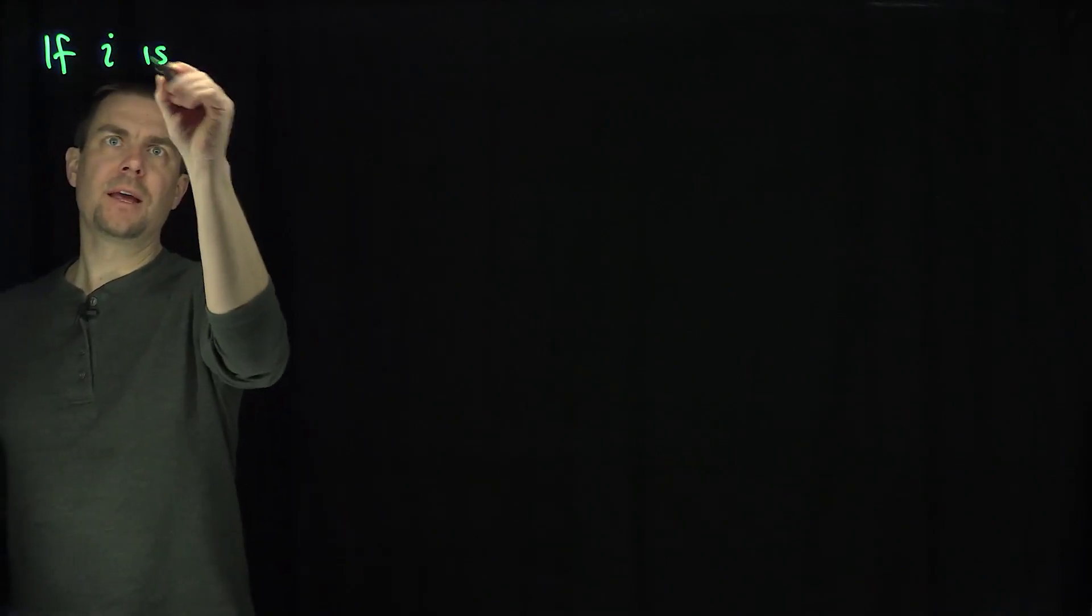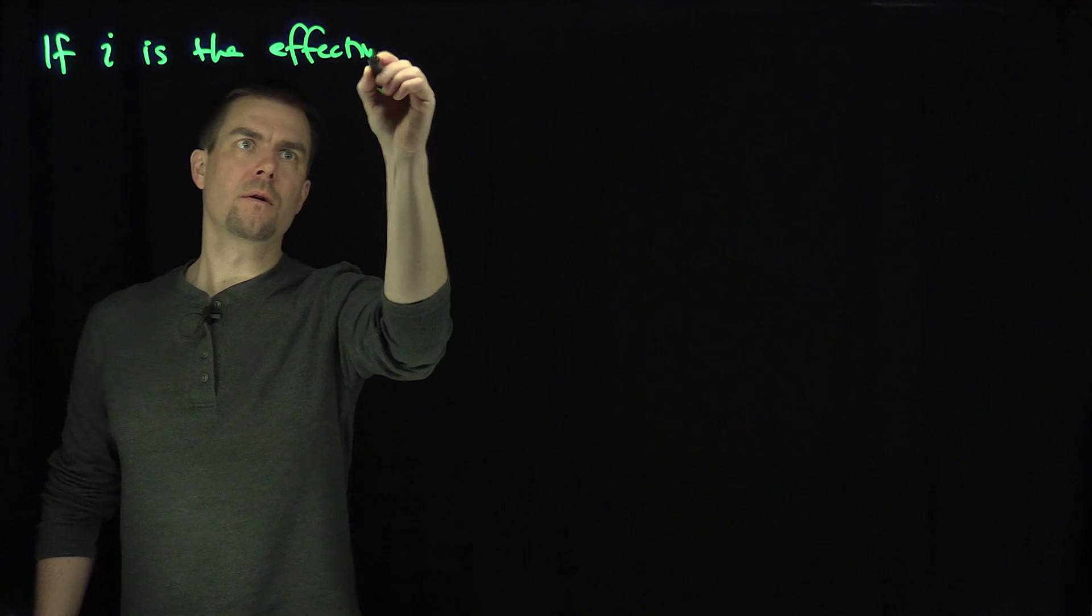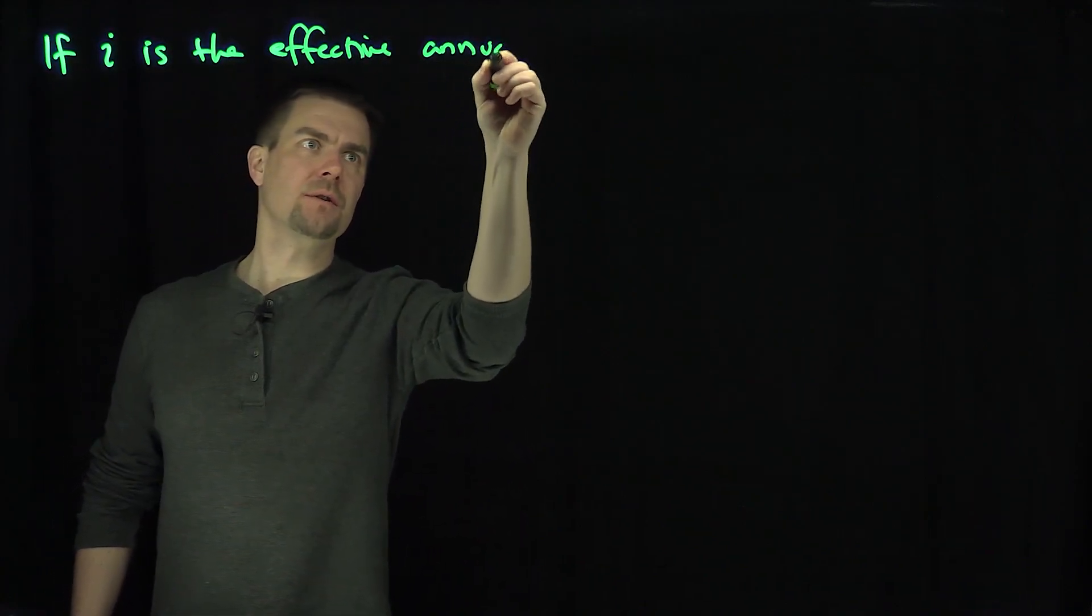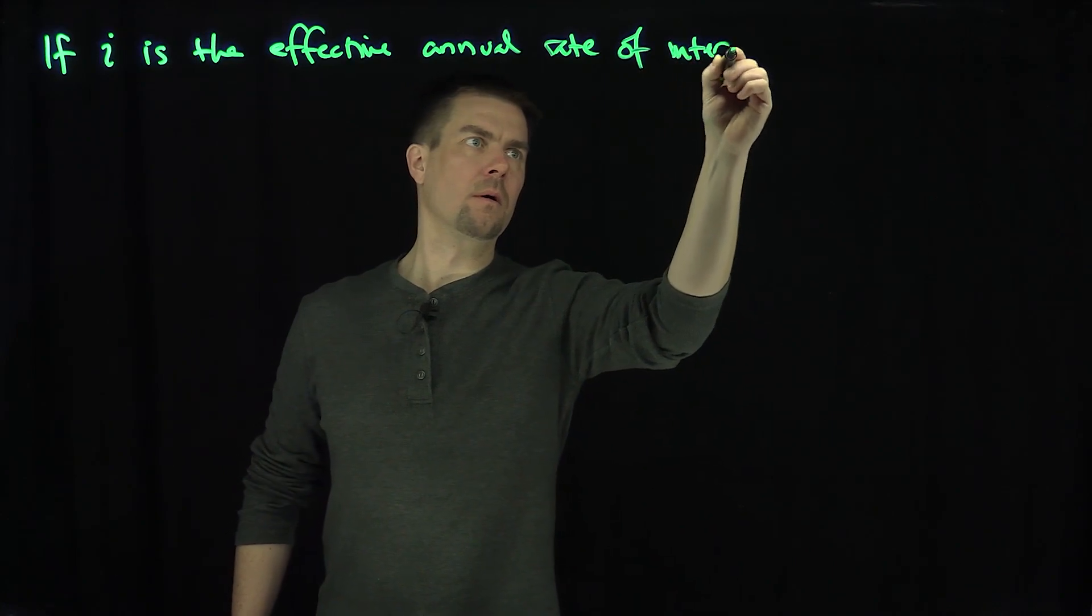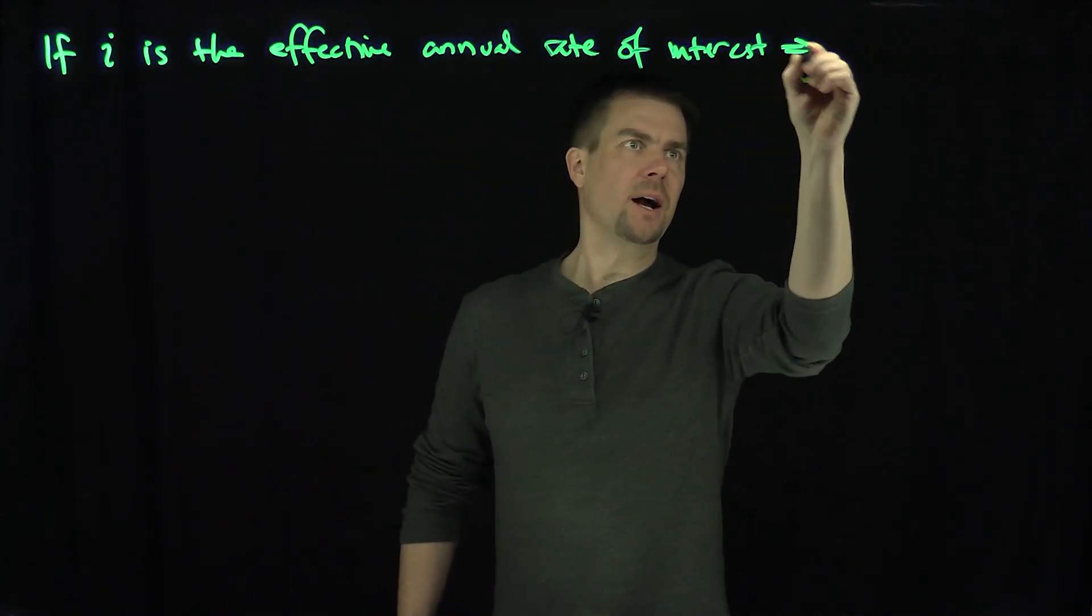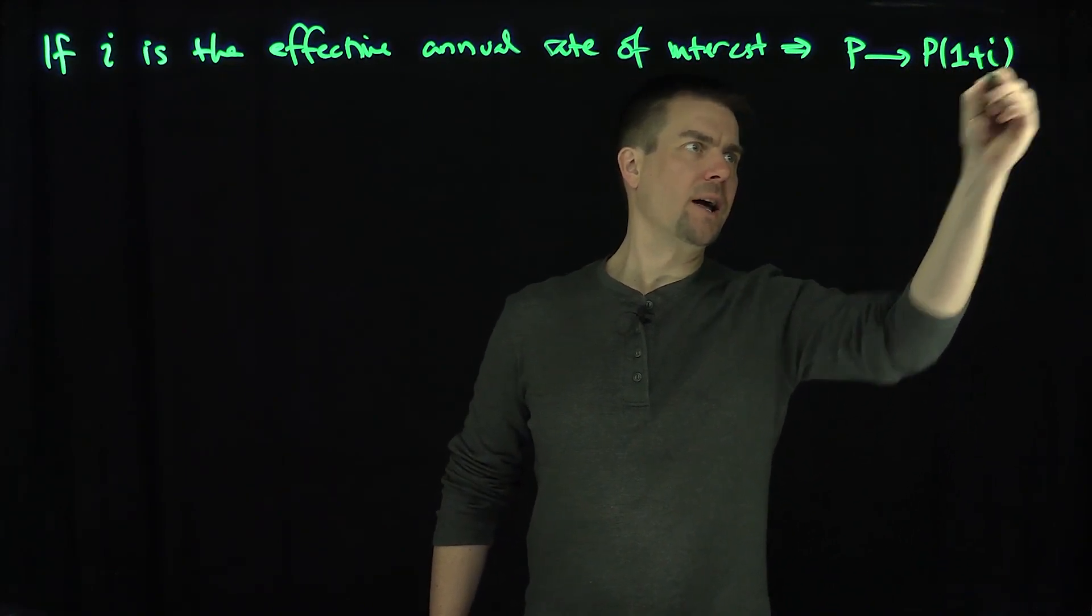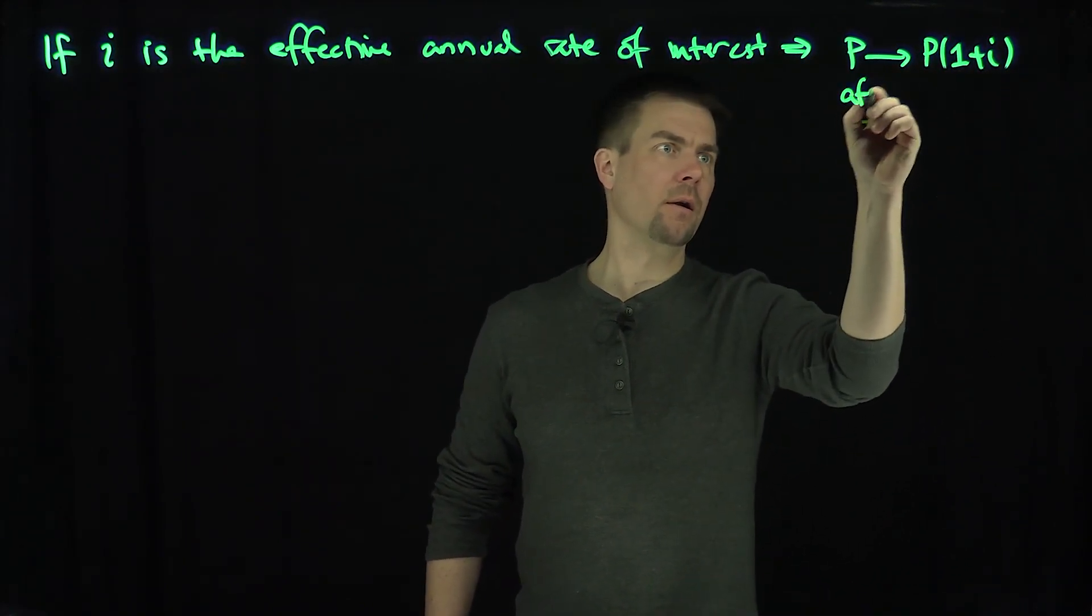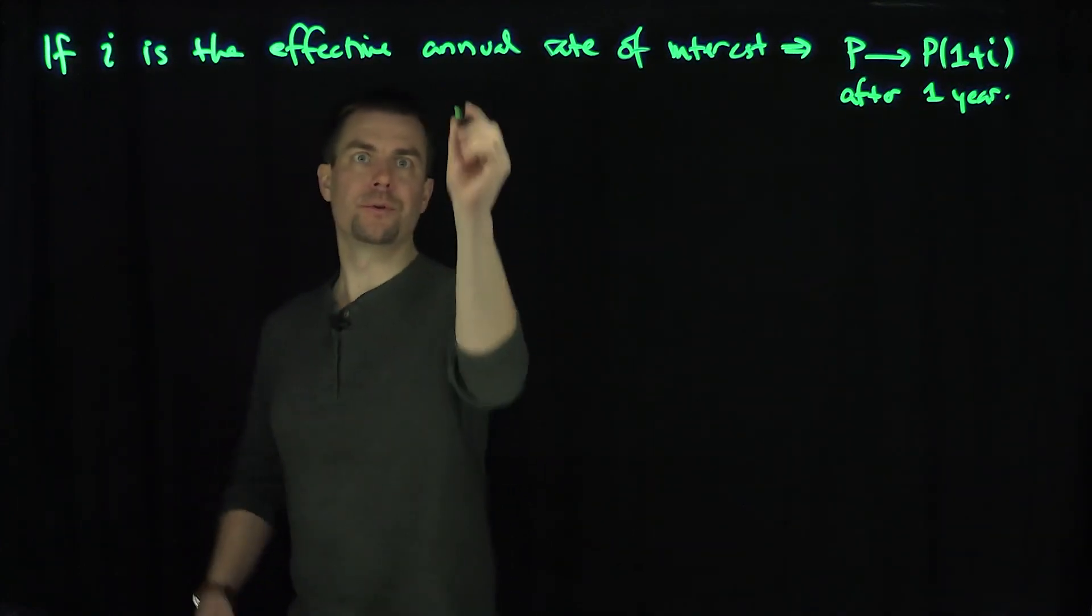If i is the effective annual rate of interest, this implies that P will turn into P(1+i) after one year. That's what annual interest is.